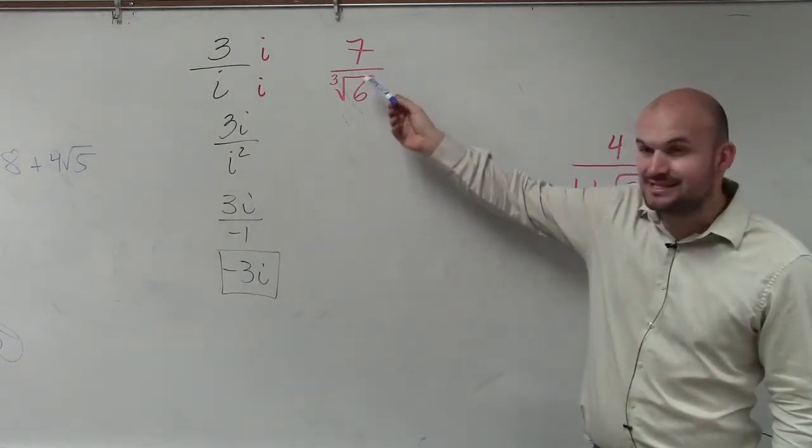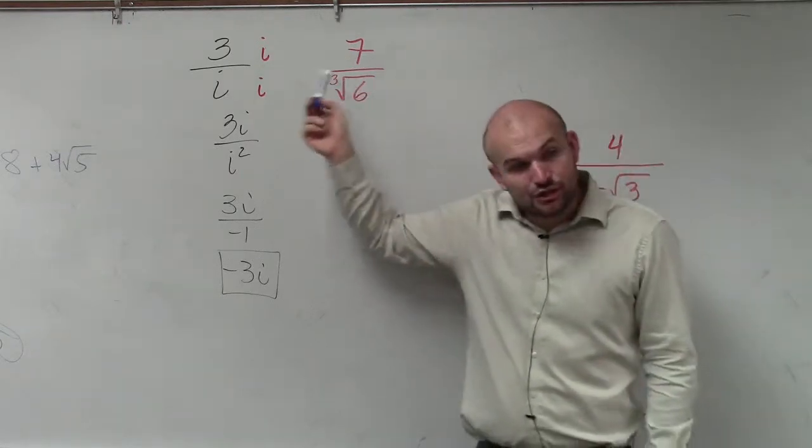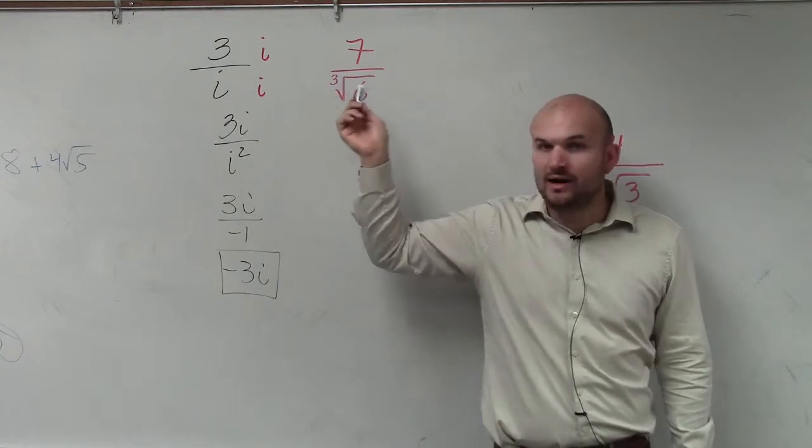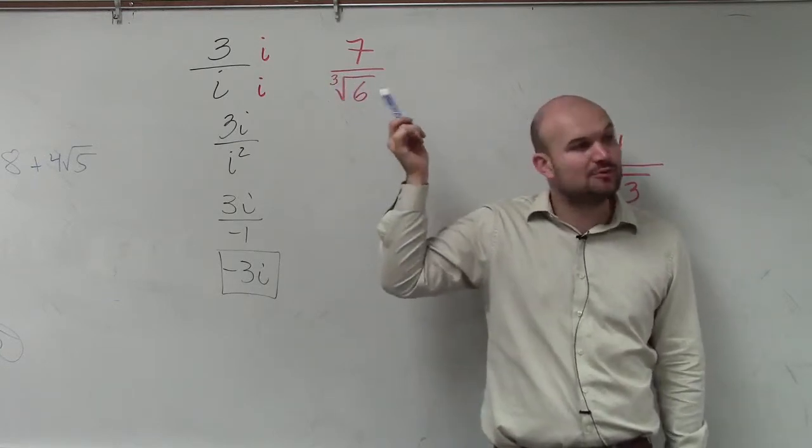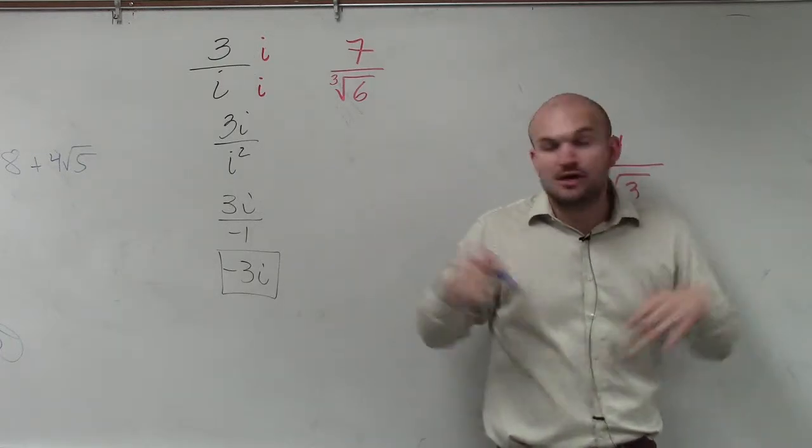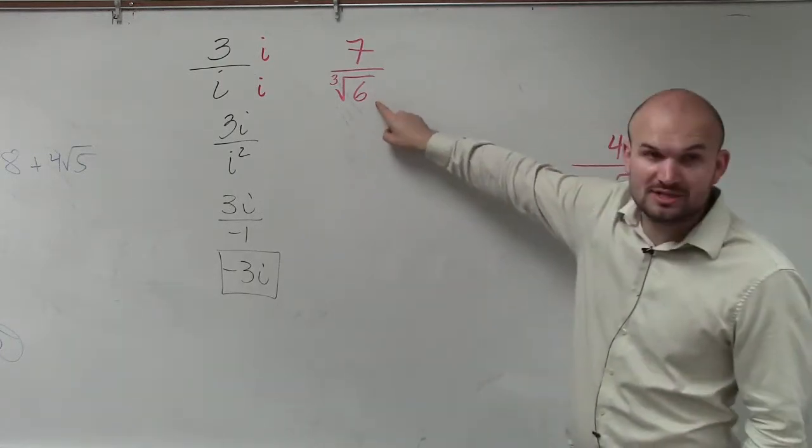So since we can't simplify this, what we would need to do is I want to get the cube root of 6 so I can take the cube root of whatever my radicand is. Right now, I can't take the cube root of 6. So I need to take the cube root of 6 times 6 times 6. So therefore, I need to get two more 6's here.